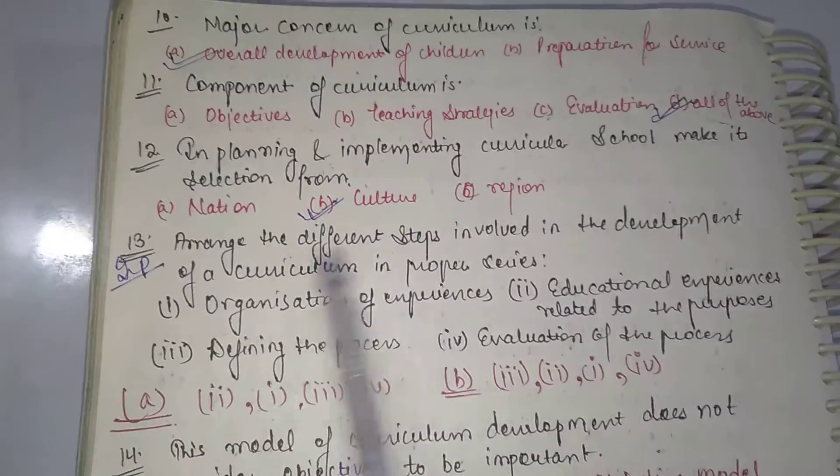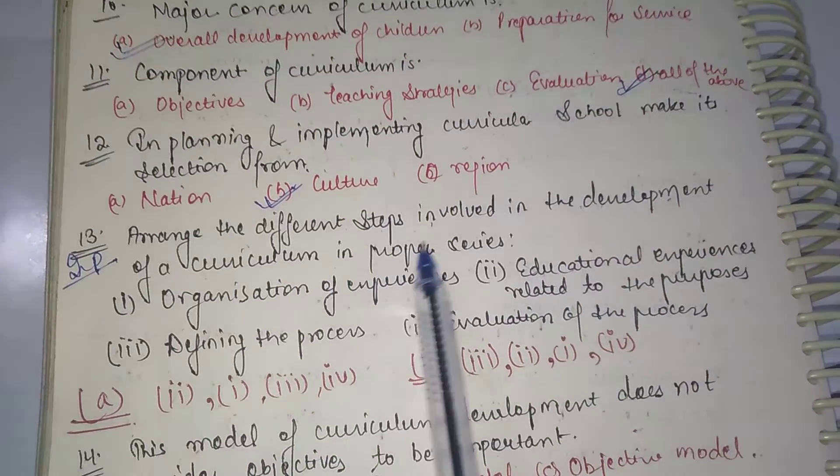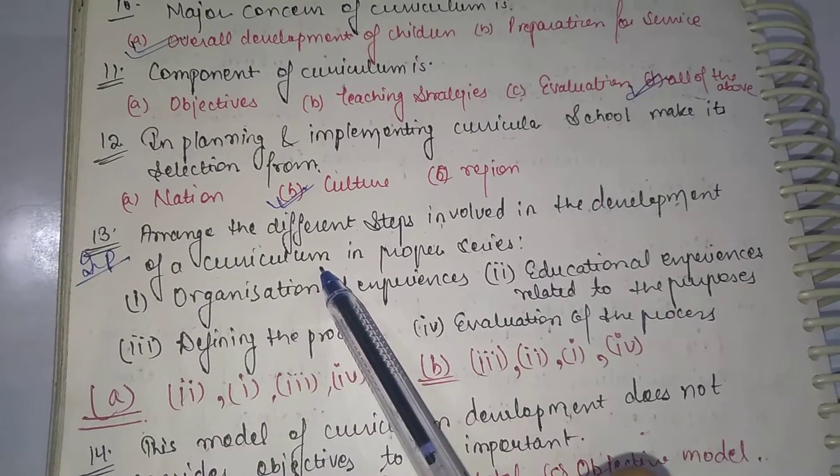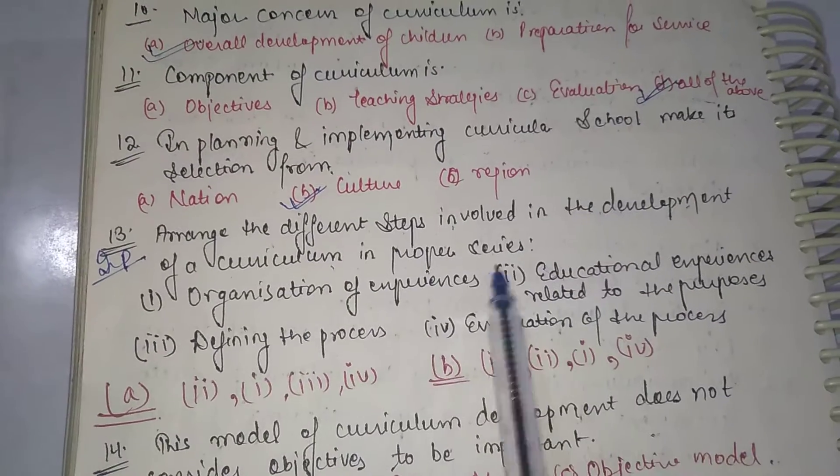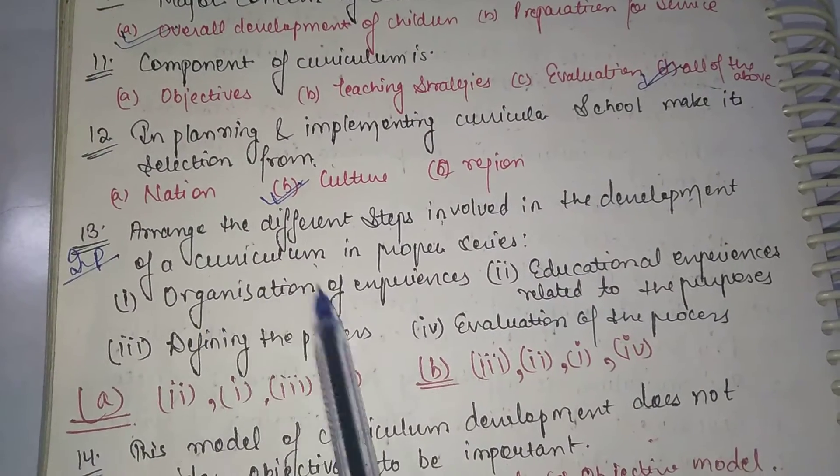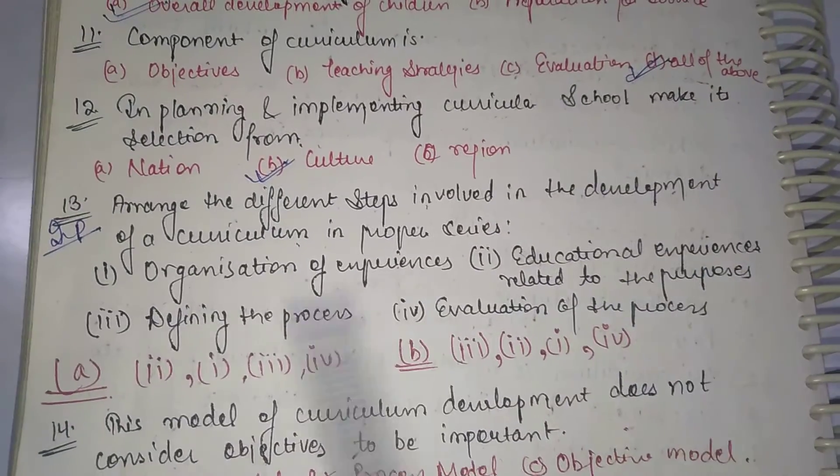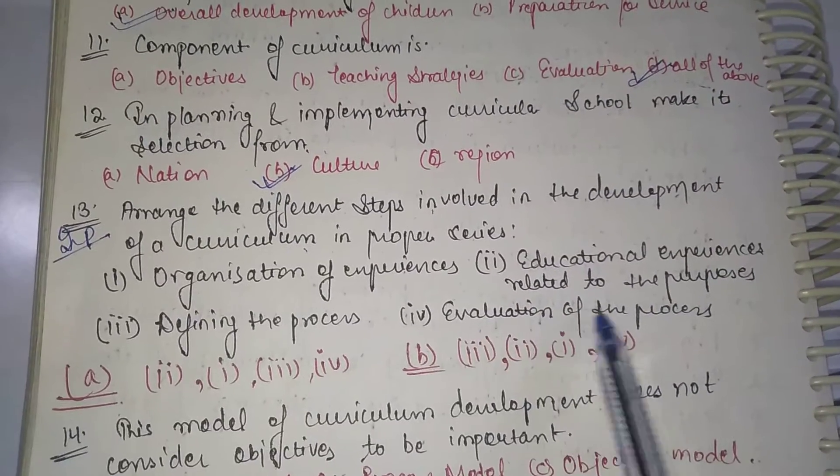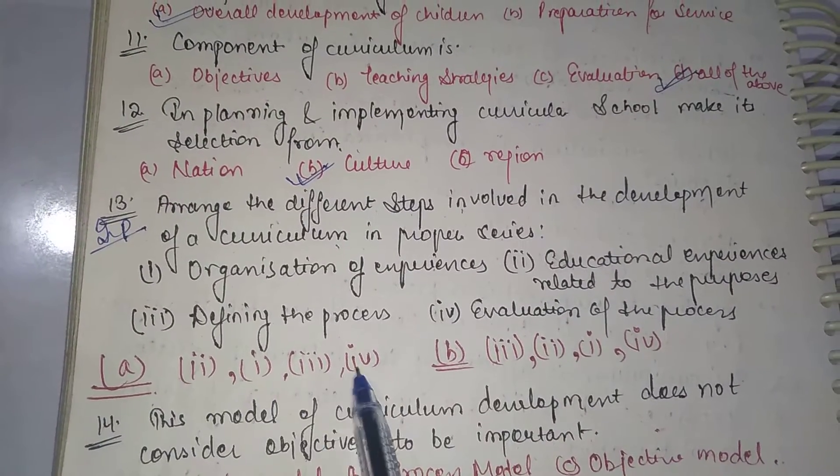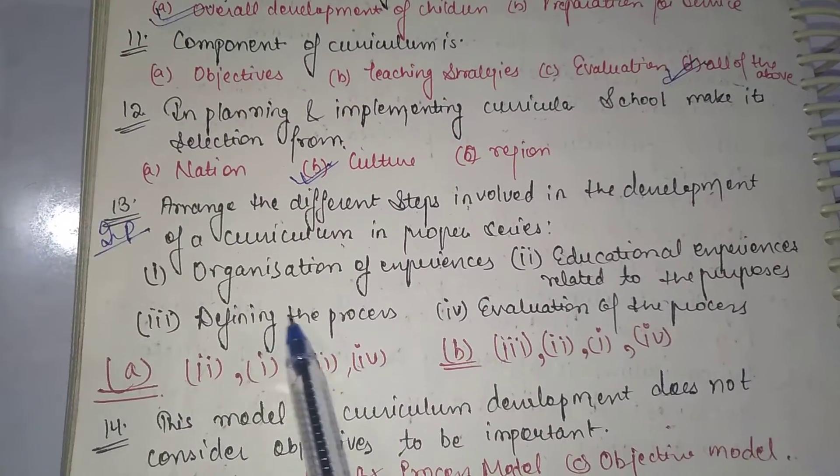The next question, it's a very important question: Arrange the different steps involved in the development of a curriculum in proper series. The options are: organization of experiences, educational experiences related to the purposes, defining the process, evaluation of the process. First, we will define the process. We will set our aims, objectives and goals.